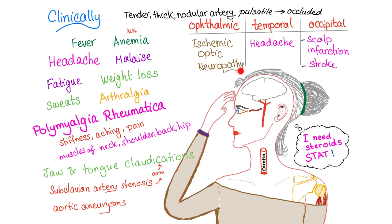Involvement of the ophthalmic artery leads to ischemic optic neuropathy — the patient can become blind quickly. The temporal artery causes headache over the temple. Involvement of the occipital artery can cause scalp infarction and stroke. The artery is initially tender, thick, and nodular — first pulsatile, then completely occluded. Headache over the temporal region in an elderly woman is temporal arteritis until proven otherwise. Give steroids fast, otherwise eyes will go bye-bye.